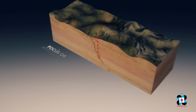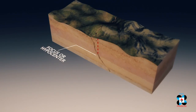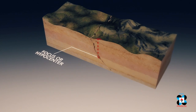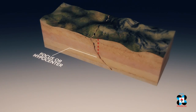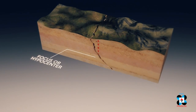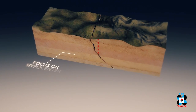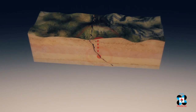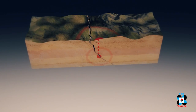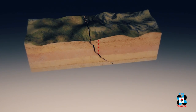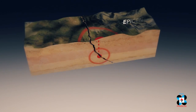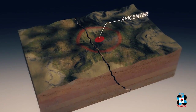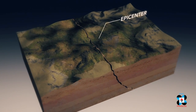An earthquake originates in the focus, or hypocenter, a point inside the Earth where the earthquake begins. The epicenter is the point on the surface directly above the focus. Most often, the gravest damages can be seen near the epicenter.